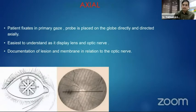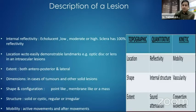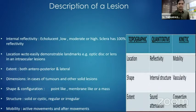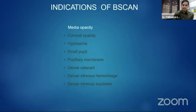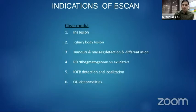In the axial section, it is measured in the primary gaze and the probe is kept in the center of the cornea; it helps in detecting the lesion or membrane in relation to the optic nerve. Lesions are described in terms of internal reflectivity or echogenicity, location, extension, dimension, shape, structure, and mobility. The indications of B-scan include cases of media opacity and also certain clear media conditions.